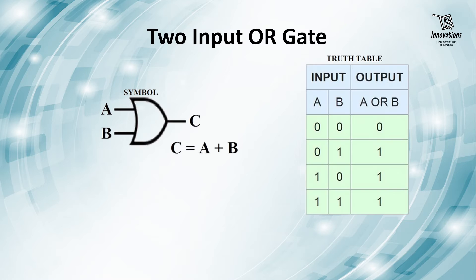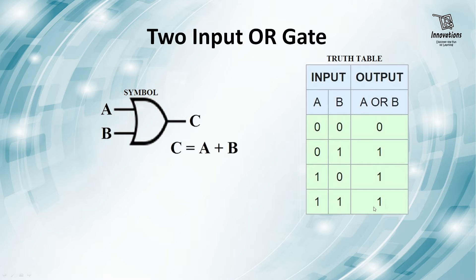Now let us see the truth table of a two-input OR gate. A and B are the inputs and the output is A OR B. When both inputs are 0, output is 0. When inputs are 0 and 1, output is 1. When inputs are 1 and 0, output is 1. When both inputs are 1, output is 1. So unless both the inputs are 0, in every other case the output is 1.